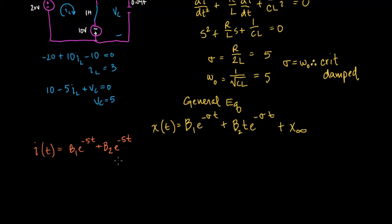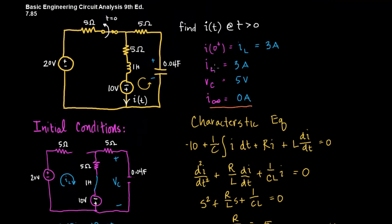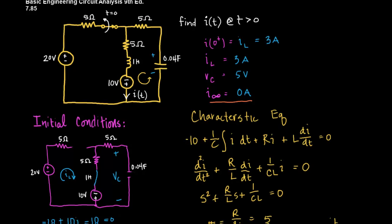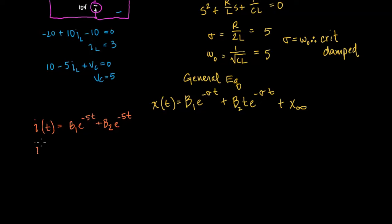Using the initial condition from the inductor, we know i(0) equals 3 amps. Plugging t equals zero into the general equation: 3 = b1·e^0 + b2·(0)·e^0, which gives b1 equals 3.